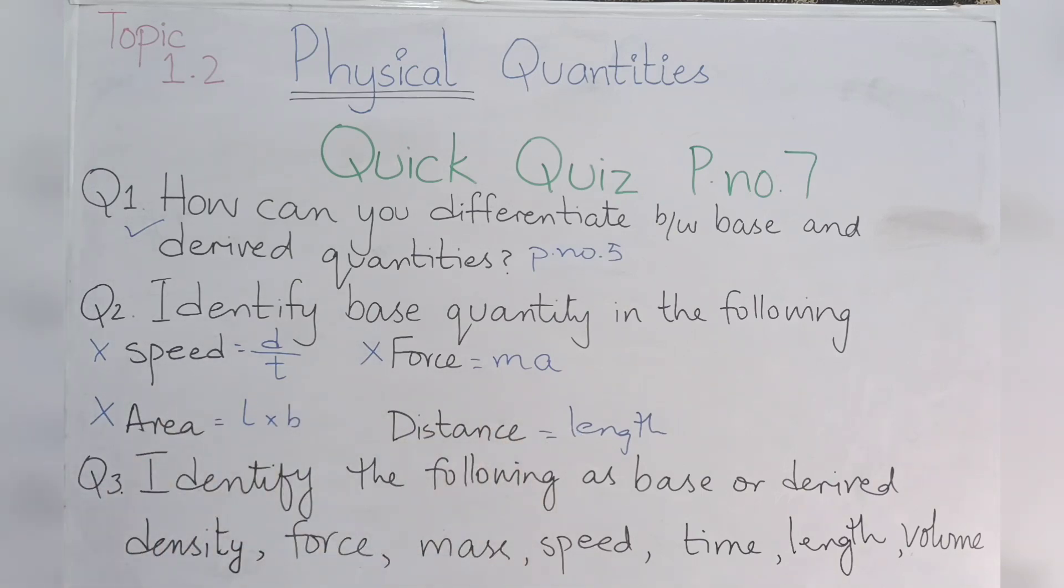Question number 3 is identify the following as base or derived quantity. So density, you know, is mass over volume. Again, you can see both base quantities, so density is not a base quantity but a derived quantity.